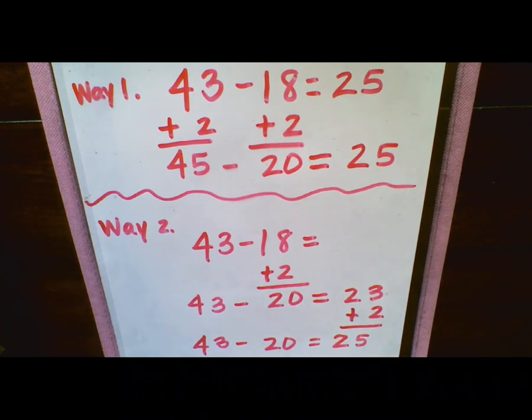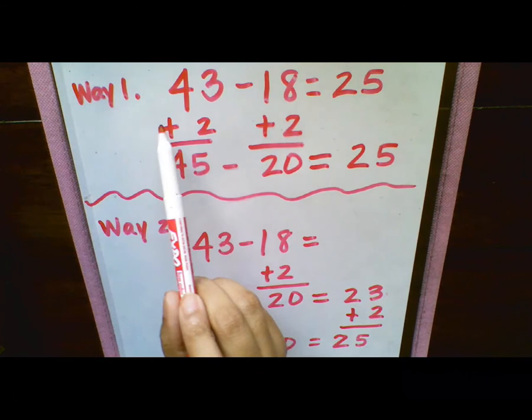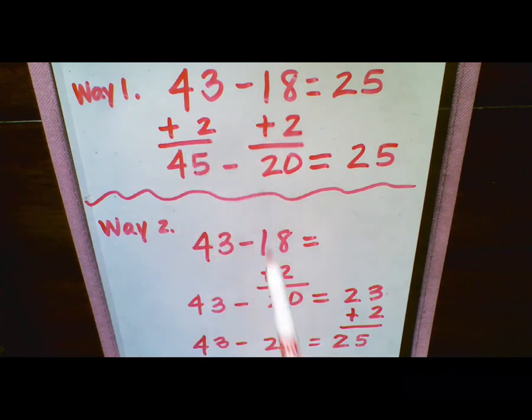So both of these ways give you the same exact answer. You can add them both at the same time. Or you can add it just to the item that will give us the easiest 10. And then add that answer, the same number, to our answer or our sum. So either way works exactly fine.